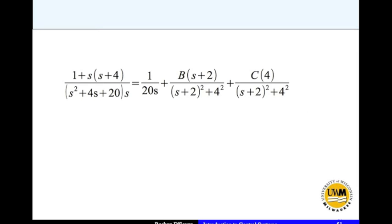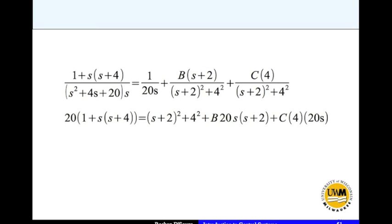Unfortunately for B and C there is no option but to do brute force. So multiply by the common denominator on both sides. And this is what you get.